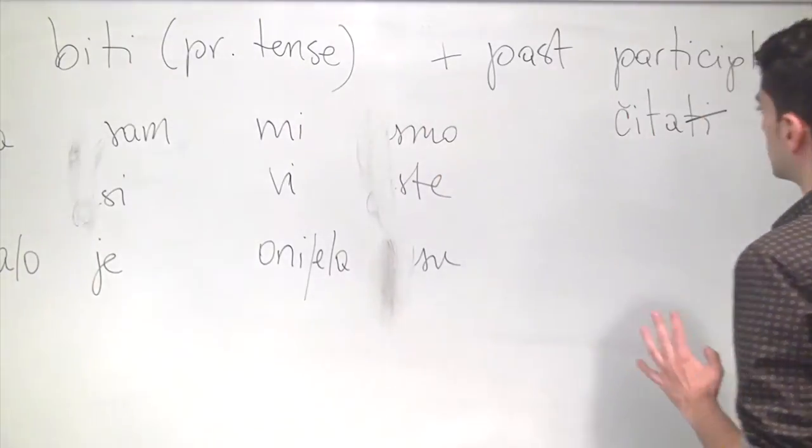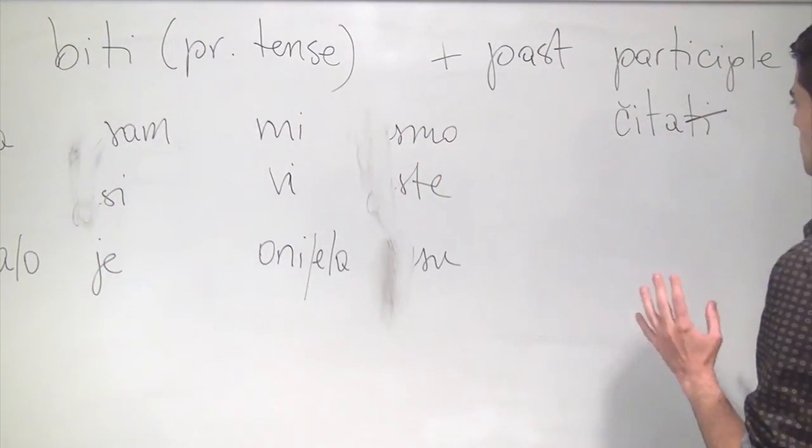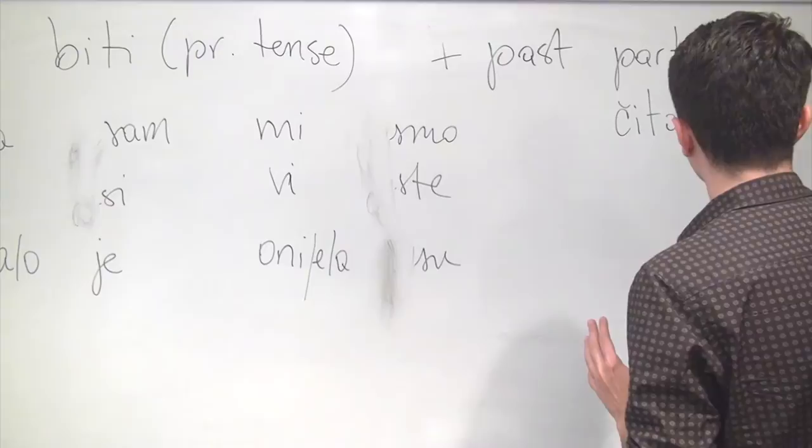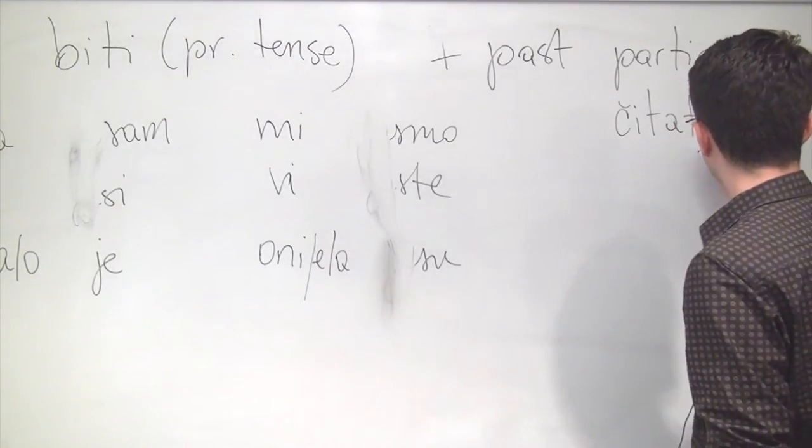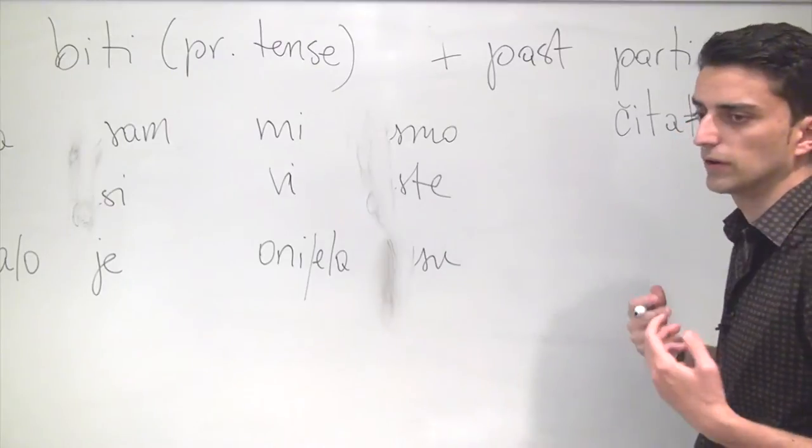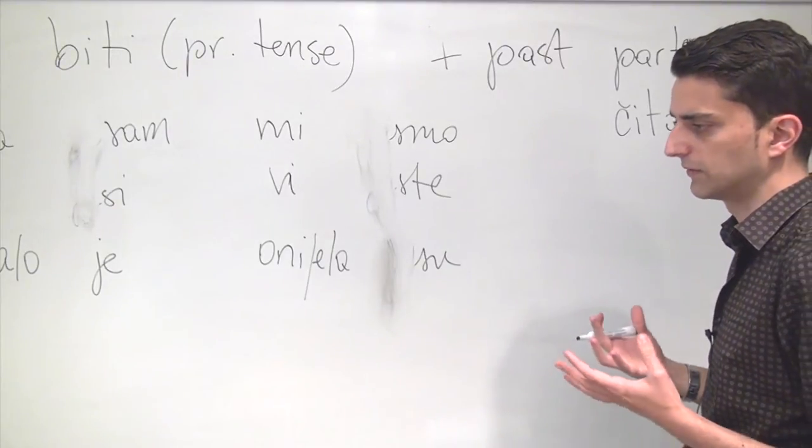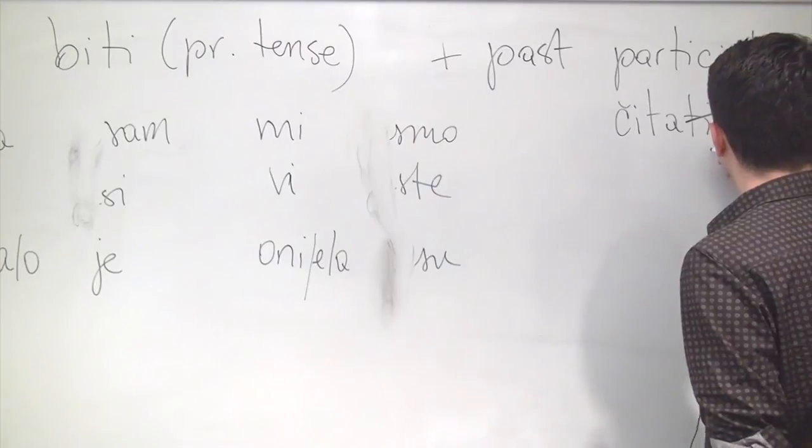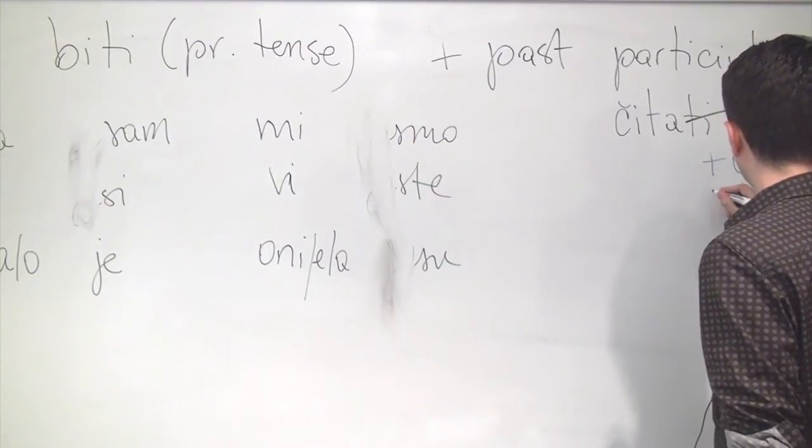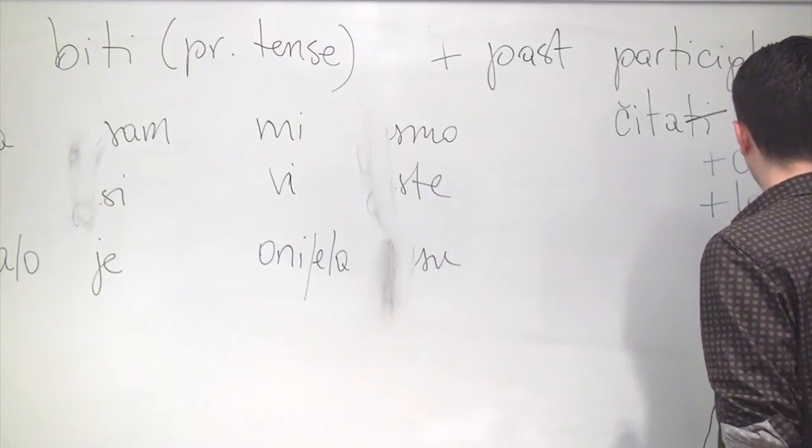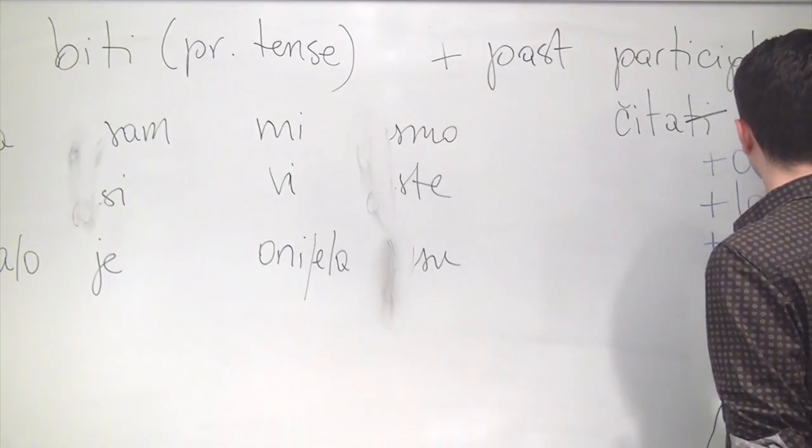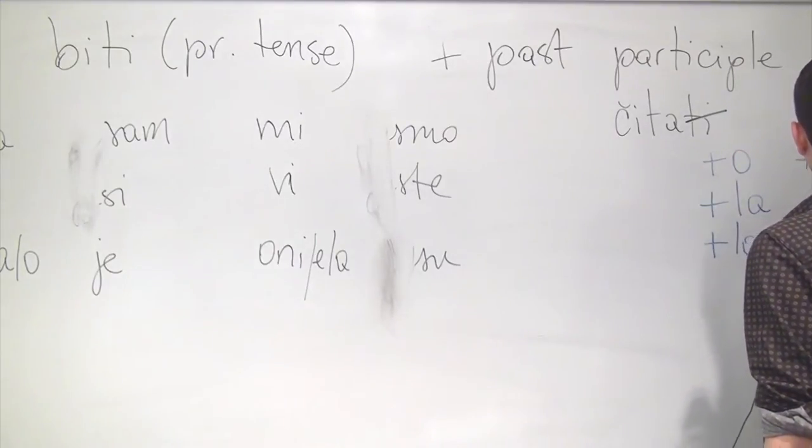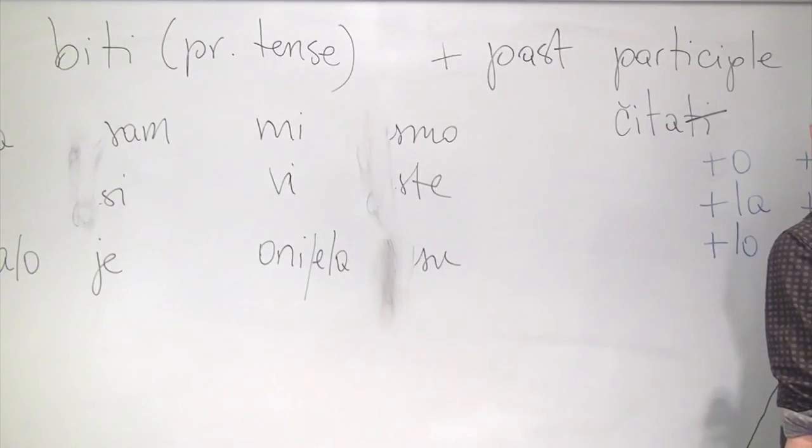Now, this portion of it, the past participle is gendered, meaning that it gets gendered suffixes. So, what you get is, depending on the gender of the subject, of the grammatical subject in the sentence, is either o, la, lo in singular, and then li, le, or la in the plural.